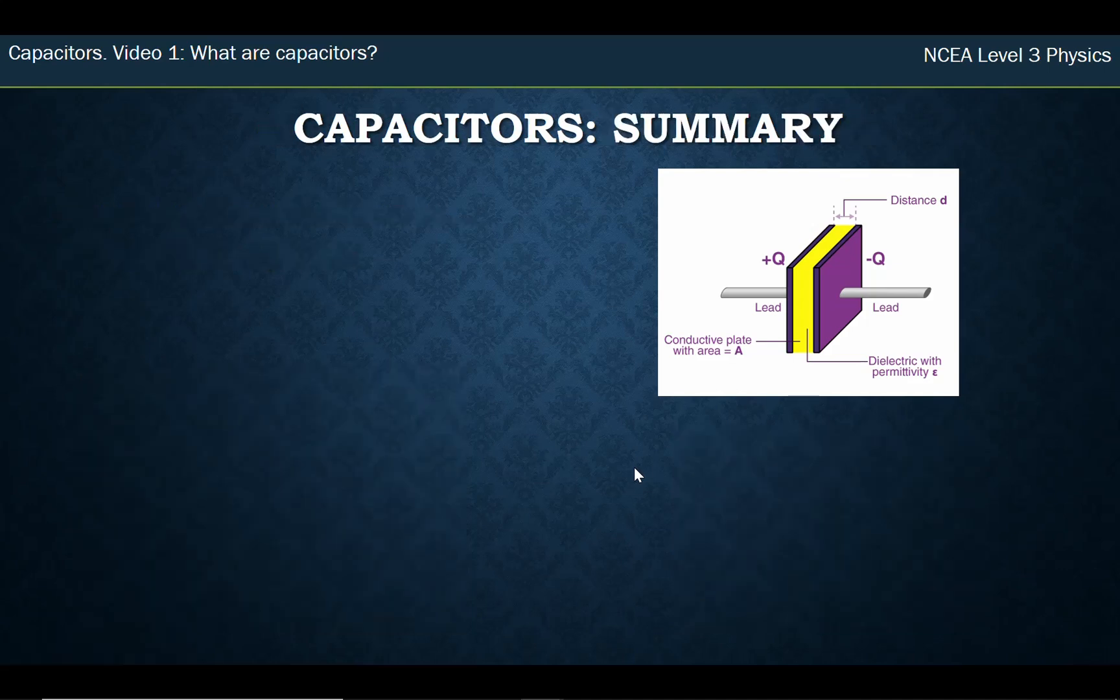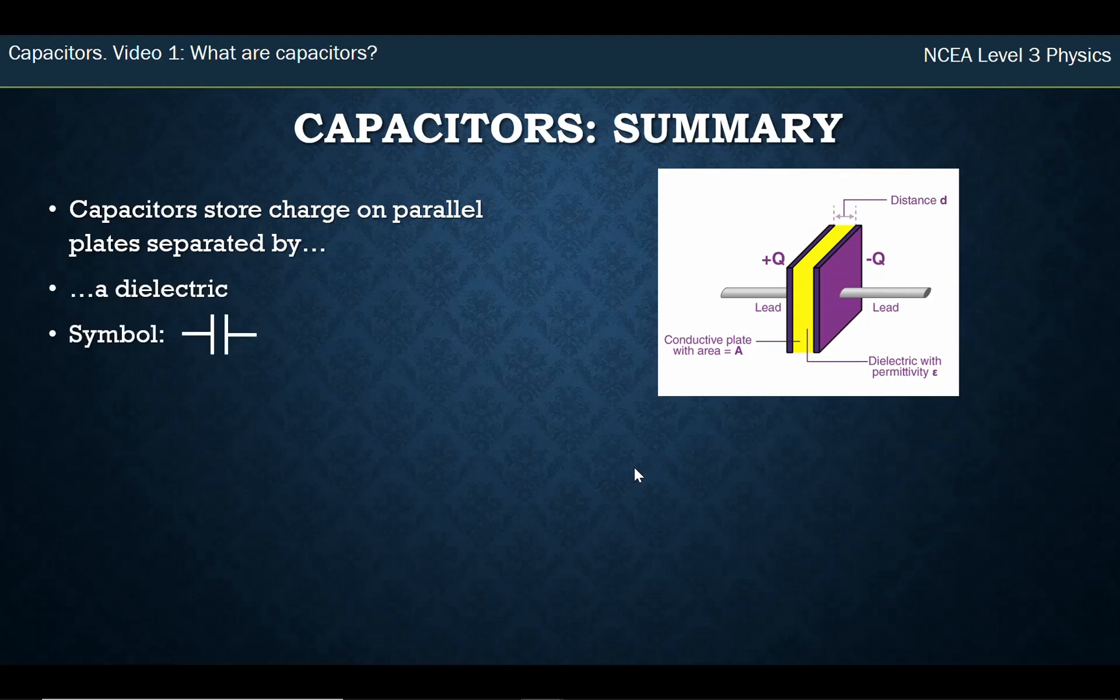In summary of today's video, capacitors store charge on parallel plates. Those parallel plates are separated by a dielectric - that's the name of the thing in the middle. The symbol for a capacitor is two equally sized parallel lines. One formula for how good a capacitor is is given by this one, and the second one says how much charge you can store on a capacitor, which is capacitance times voltage.